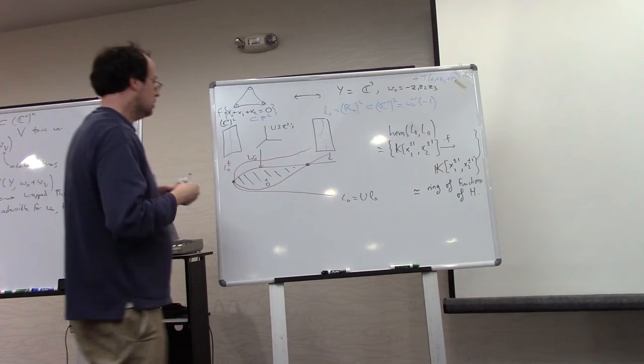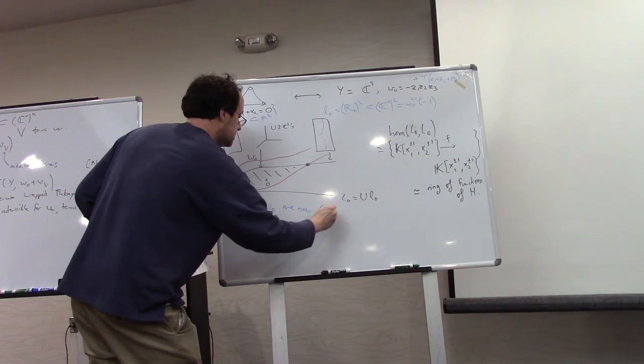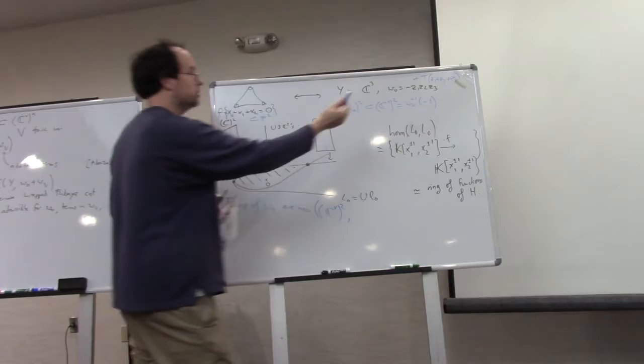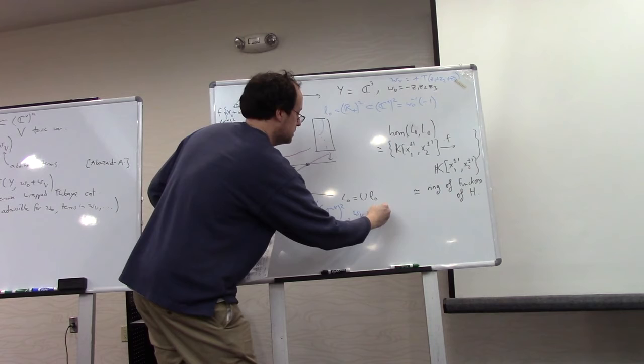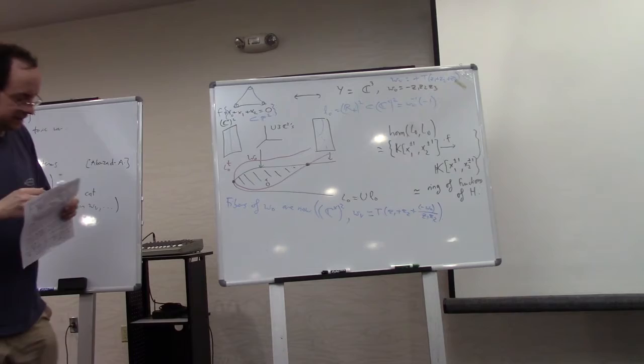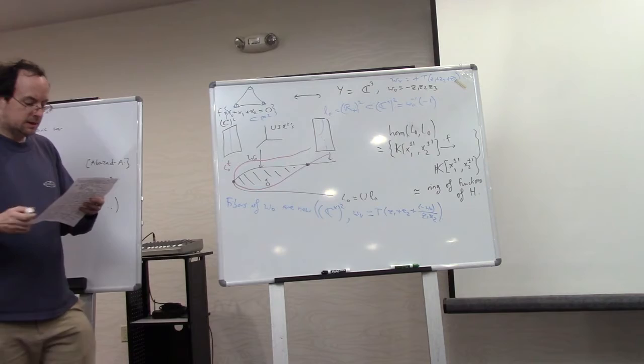So now, the effect of these extra terms of the superpotential is that the fibers of W0 are now, they're still C star squared, but if I now look at the restriction of this extra term W sub v, that is going to be T times Z1 plus Z2 plus Z3, which you can rewrite as minus constant over Z1, Z2. And up to some fiddling with the constants, you recognize here the mirror of CP2. C star squared with Z1 plus Z2 plus constant over Z1, Z2.